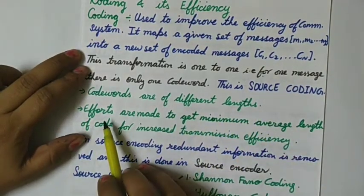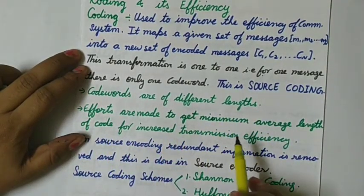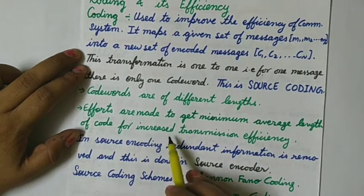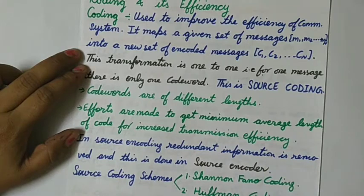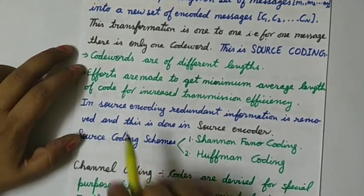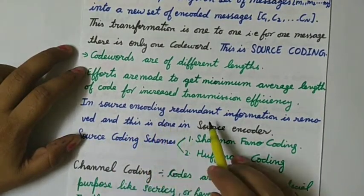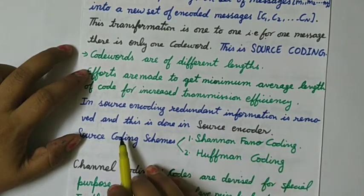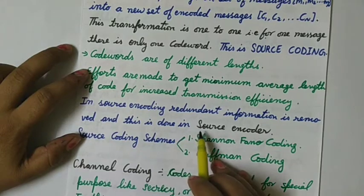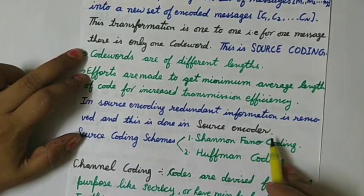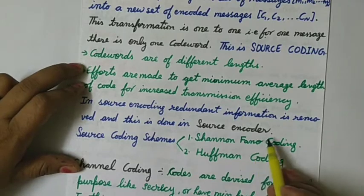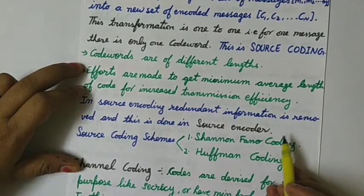Efforts are made to get the minimum average length of the code in order to get increased transmission efficiency. In source encoding, the redundant information present in a message is removed, and this is done in the source encoder part of the circuit, which we'll see in the diagram in the next slide.